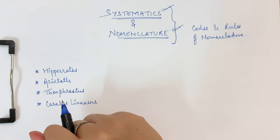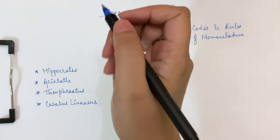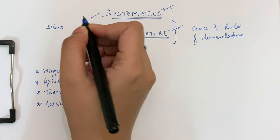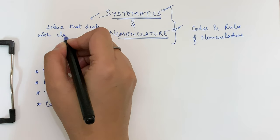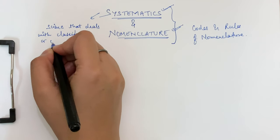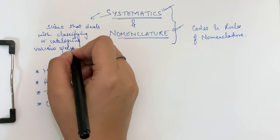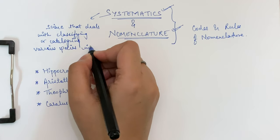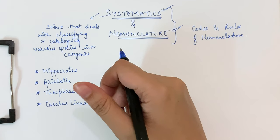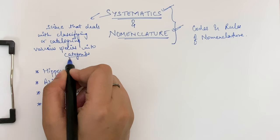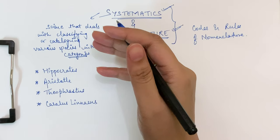Let's start with systematics. What is systematics? Basically, it is the branch of biology — the science that deals with classifying or cataloging various species, whether plants or animals, into categories. Systematics is the science that deals with classifying or cataloging various species into categories. These categories should be such that they can be named differently, compared, or studied further.